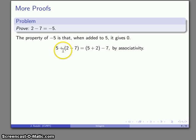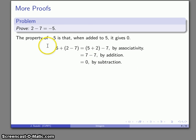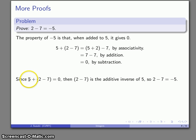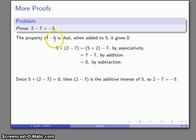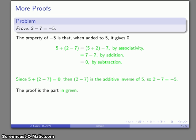Consider the addition five plus two minus seven. By associativity — which we've assumed holds for the integers — this is the same as five plus two minus seven, which is seven minus seven, and that's zero. We can do that subtraction because it's a subtraction of whole numbers. This tells us that because we can add these two things and get zero, two minus seven is the additive inverse of five — because if I add it to five I get zero, and that's the property of what an additive inverse is. The proof is the portion shown in green.